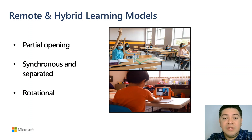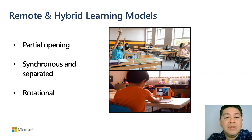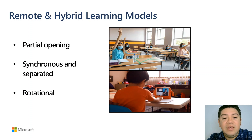As institutions examine the best way to reconvene on campus, many educational models have arisen, including partial opening, when some schools are allowing only specific students to return to campus; synchronous and separated, where some educational institutions are conducting face-to-face and online instruction at the same time — some students are in-person while others are joining the same class remotely; and rotational, where other schools are rotating students on and off campus throughout the week. Students attend classes on campus on specific days while their peers work remotely, asynchronously, on the same days. On other days, the attendance flips.